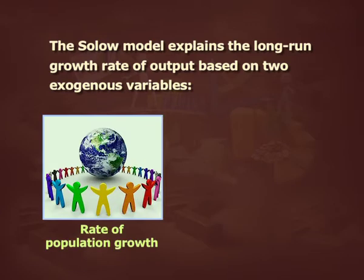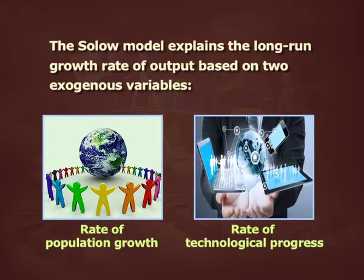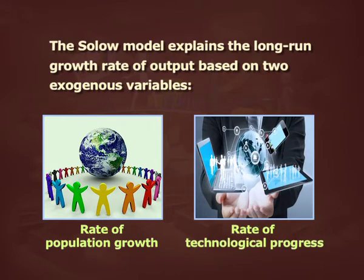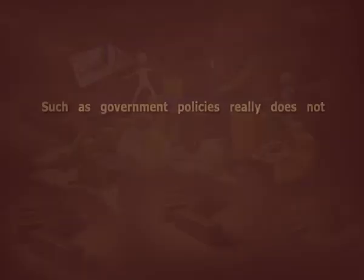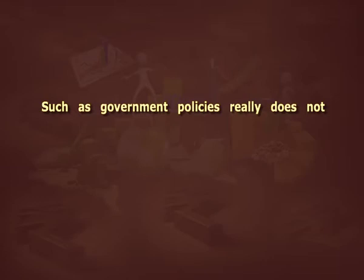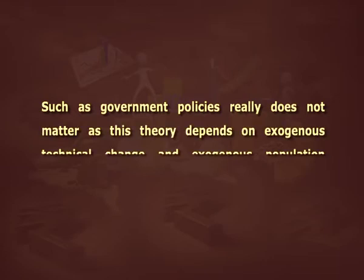The Solow model explains the long-run growth rate of output based on two exogenous variables: the rate of population growth and the rate of technological progress, both independent of the saving rate. In the neoclassical theory, the long-run growth rate depends on exogenous factors, hence it has few policy implications — government policy does not really matter as this theory depends on exogenous technical change and exogenous population growth.